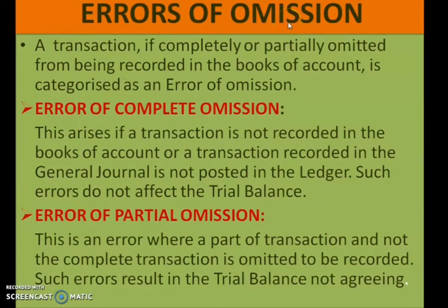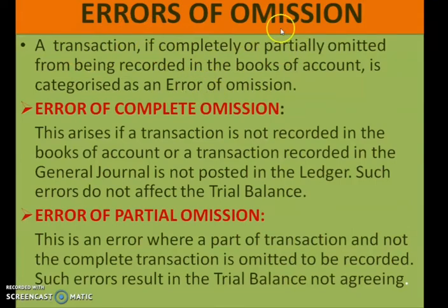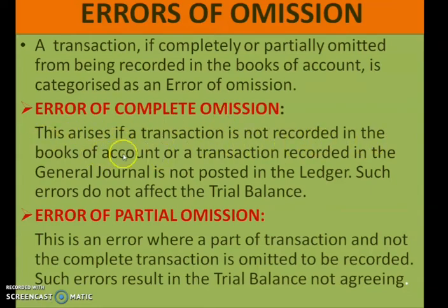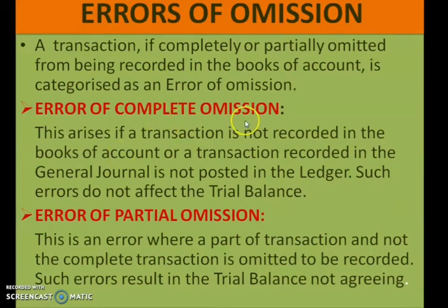The first one is error of omission. A transaction if completely or partially omitted from being recorded in the books of account is categorized as an error of omission. It may be of two types: error of complete omission or error of partial omission. Error of complete omission arises if a transaction is not recorded in the books of accounts, or a transaction recorded in the journal is not posted in the ledger. Such errors do not affect the trial balance.